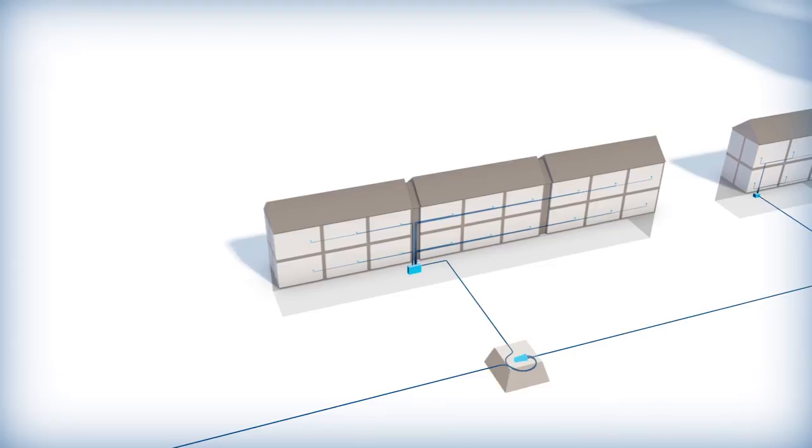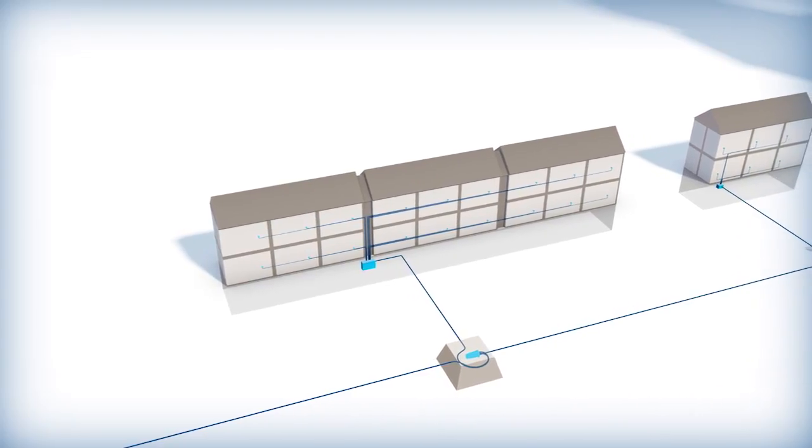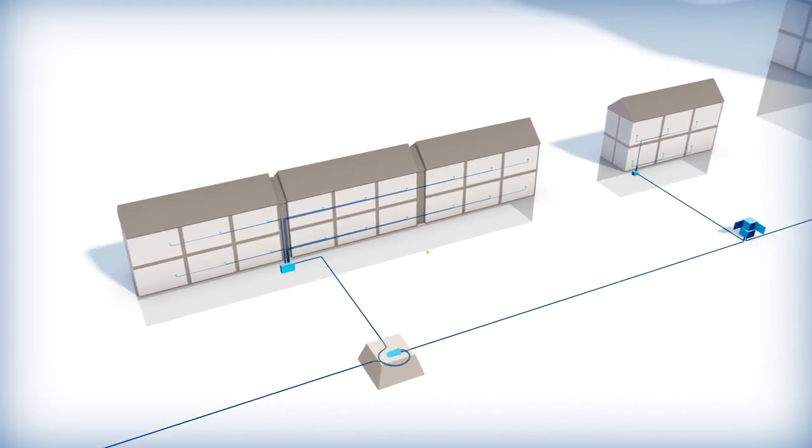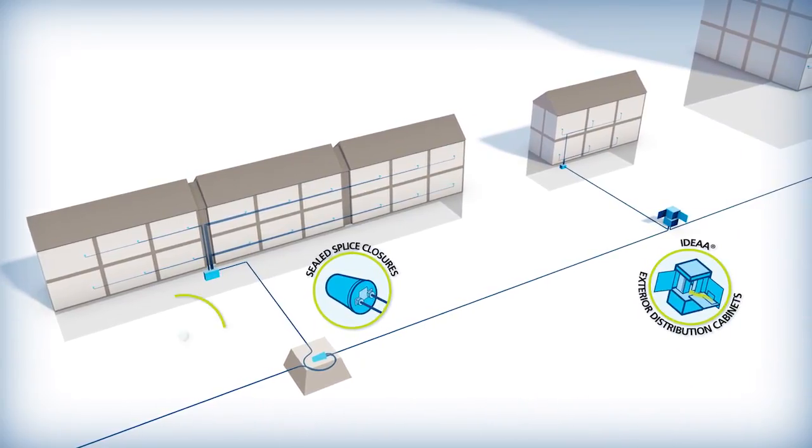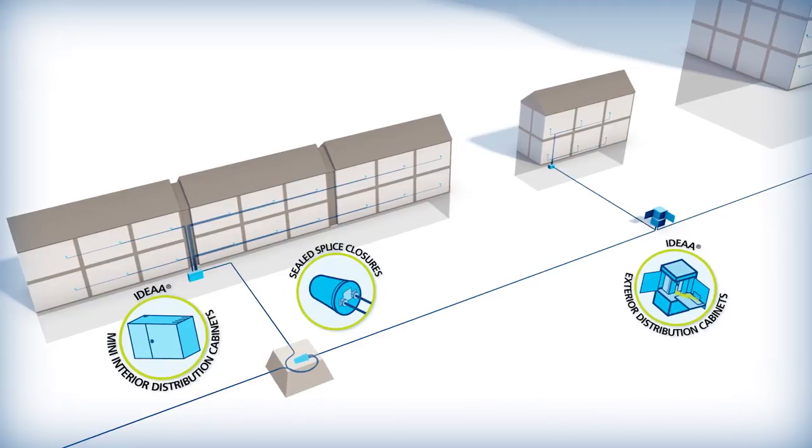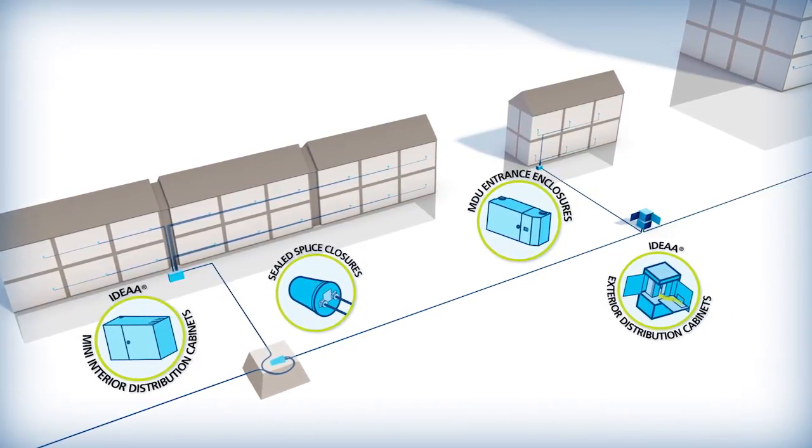AFL offers a wide array of versatile products specifically engineered for MDU deployments, including sealed splice closures, exterior distribution cabinets, mini-interior distribution cabinets, and wall or pole-mountable entrance enclosures.